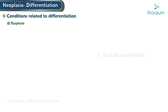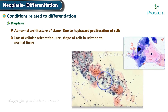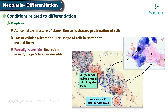Dysplasia is referred to as an abnormal architecture of tissue due to haphazard proliferation of cells. In dysplasia there is a loss of cellular orientation, size and shape of the cells in relation to normal tissue. Dysplasia is partially reversible — it is reversible in early stages and later becomes irreversible.